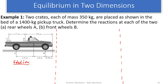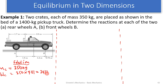Let's list our parameters. The mass of each crate mc is 350 kg. We need weight as a force, so weight equals mass times acceleration due to gravity. The weight of each crate is 350 × 9.81 = 3433.5 N.